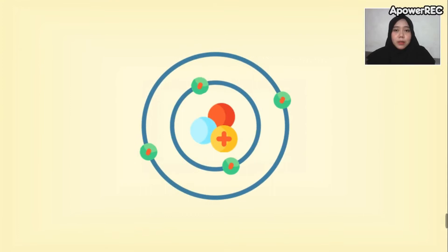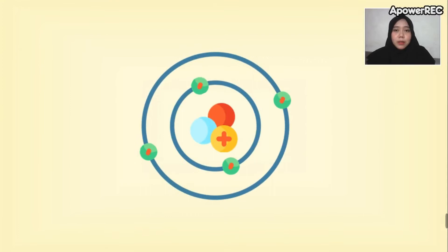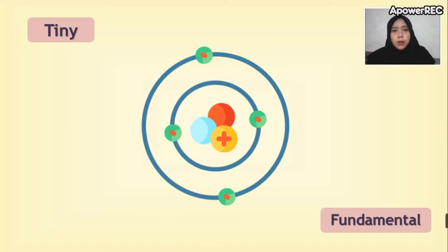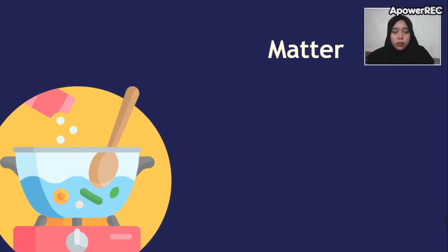Atoms are the fundamental building blocks that are incredibly tiny, which cannot even be recognized by our naked eyes. An atom consists of three elementary particles, which are elements, compounds, and mixtures.